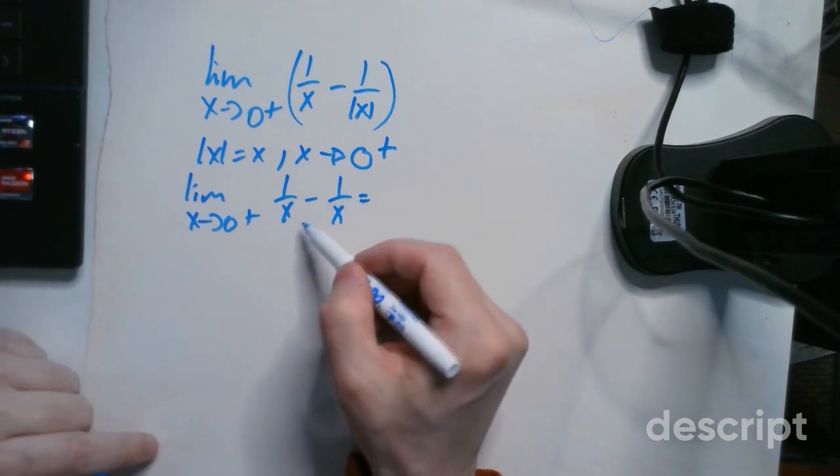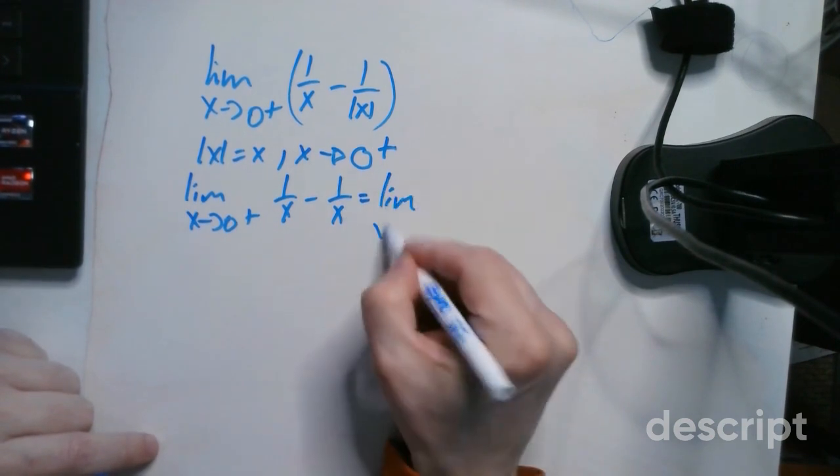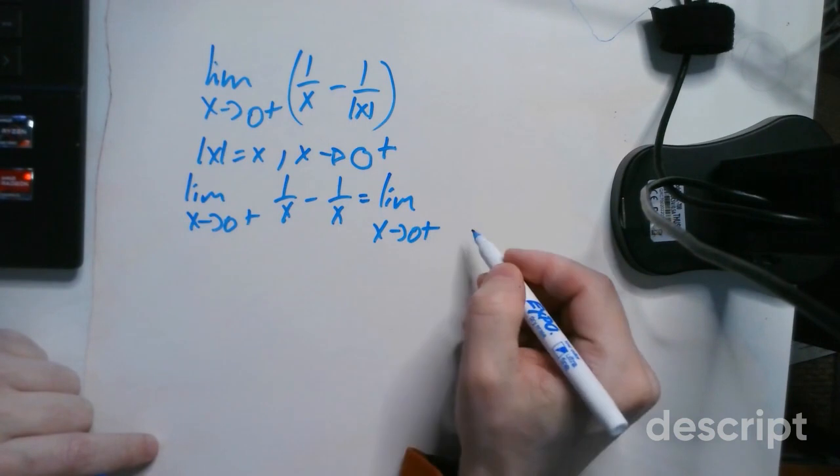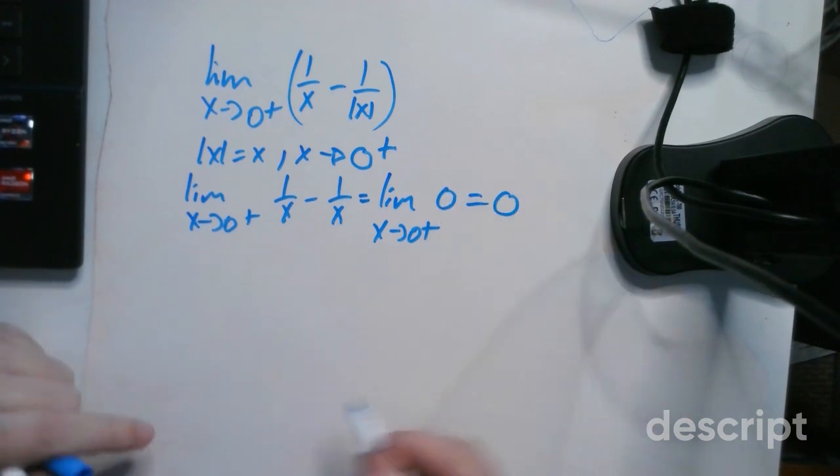Now for x not equal to 0, you can just subtract these things. So it's the limit as x approaches 0 from the right side of just 0, which is equal to 0.